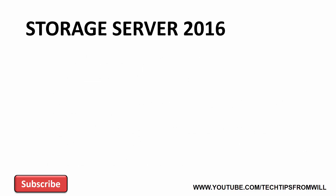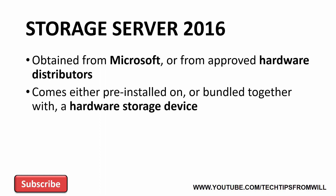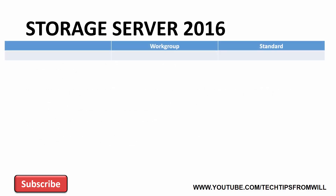The final edition I will look at is Windows Storage Server 2016. Windows Storage Server 2016 works slightly differently to the other editions we've looked at. It can be obtained either directly from Microsoft or from hardware distributors approved by Microsoft, and typically comes either pre-installed or bundled together with some kind of hardware storage device. Windows Storage Server 2016 comes in two different editions: the Workgroup edition and the Standard edition. The edition you end up with depends entirely on the type of storage device you purchase.